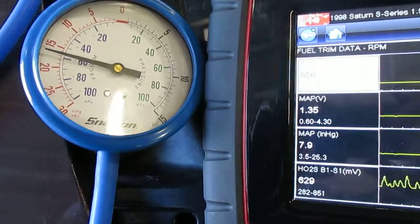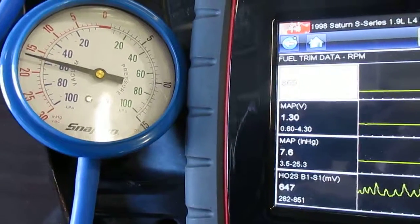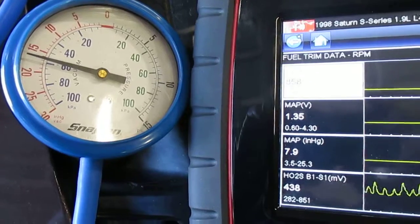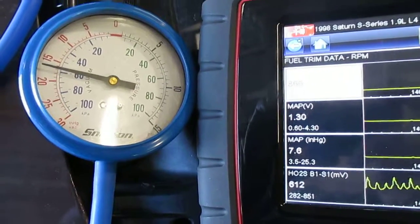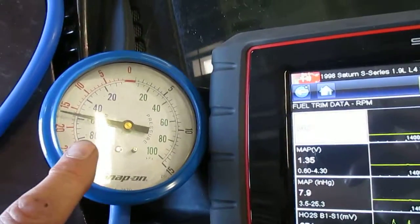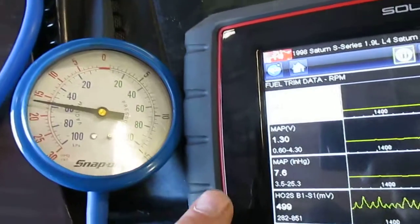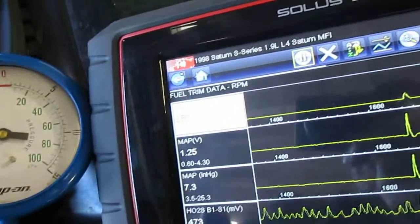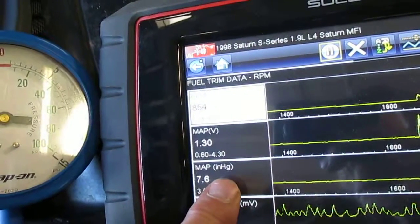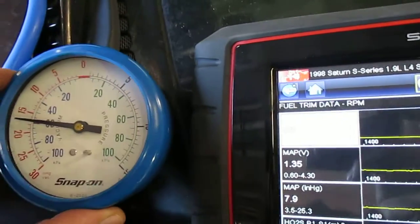Okay, this is a 98 Saturn speed density system. I want to make it easier to understand a vacuum reading as compared to your MAP reading. This is in inches of vacuum, just like this vacuum gauge.